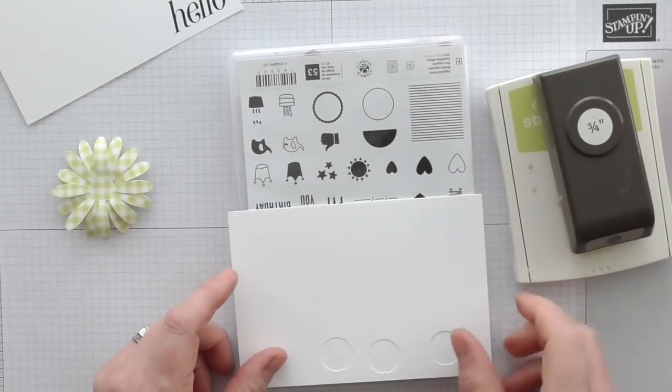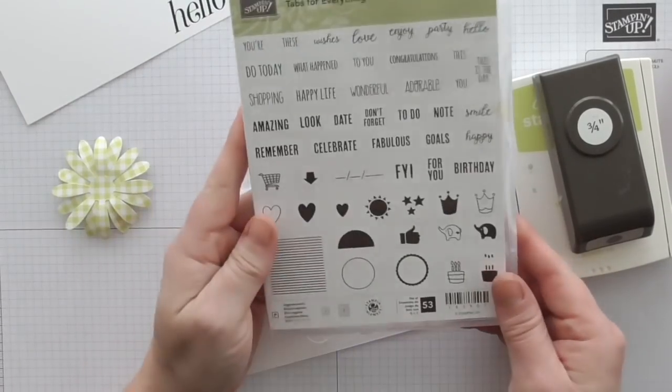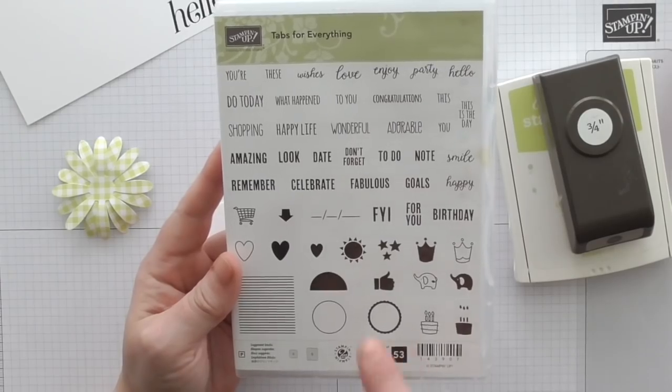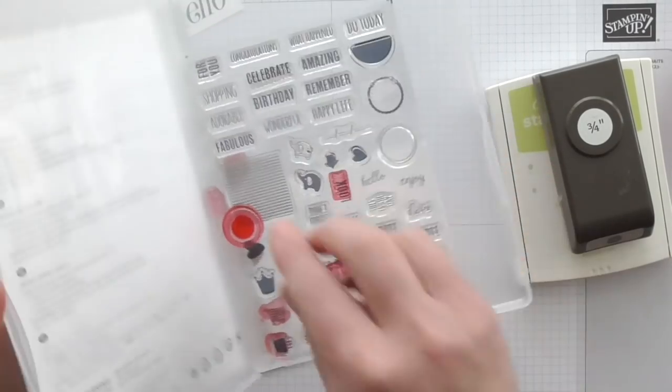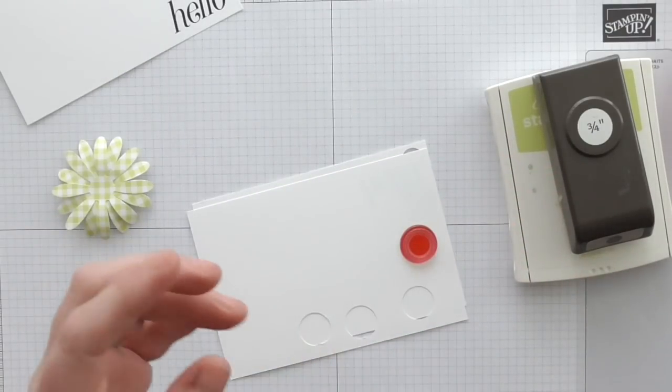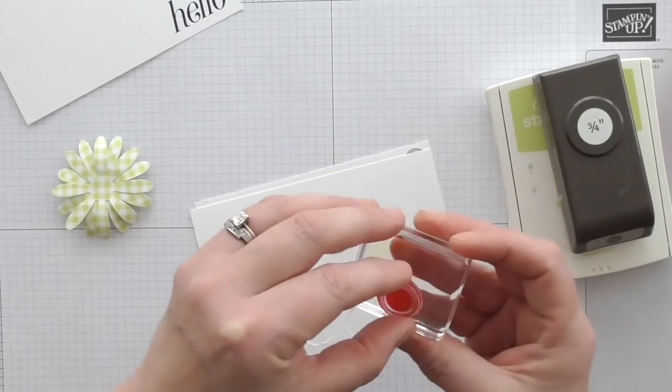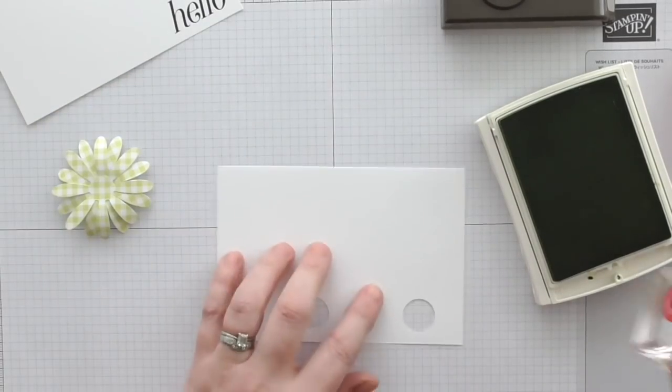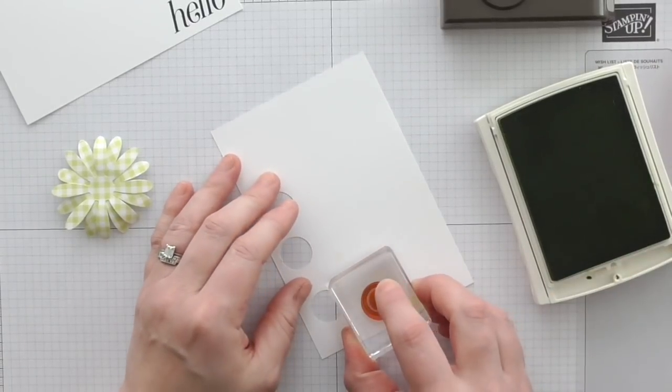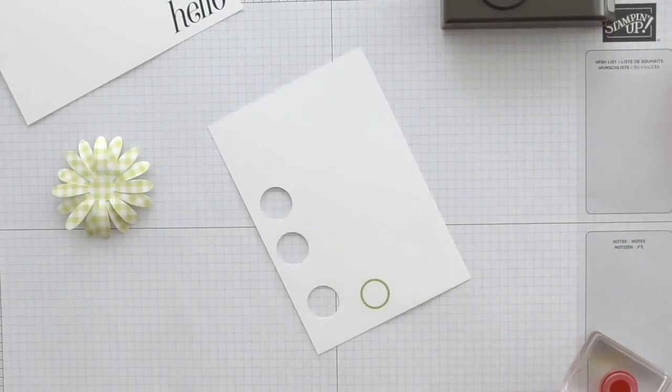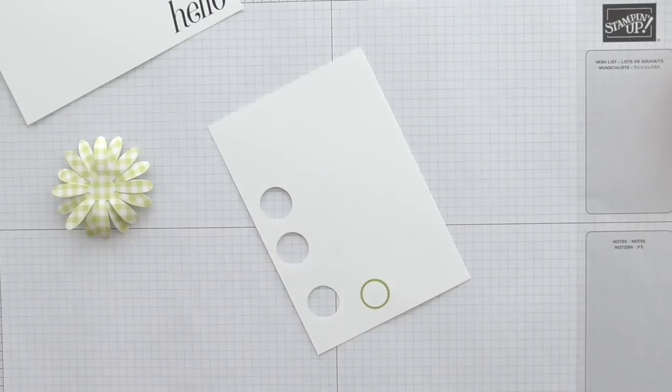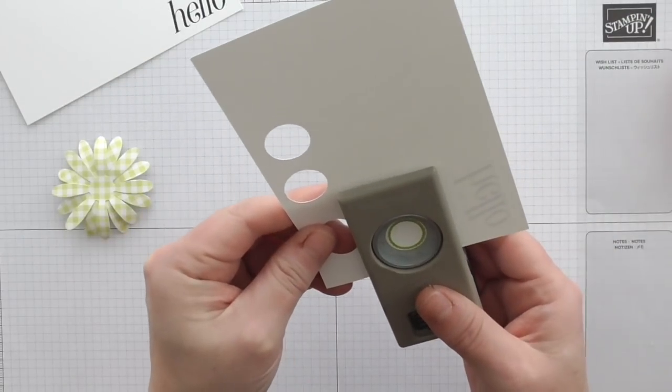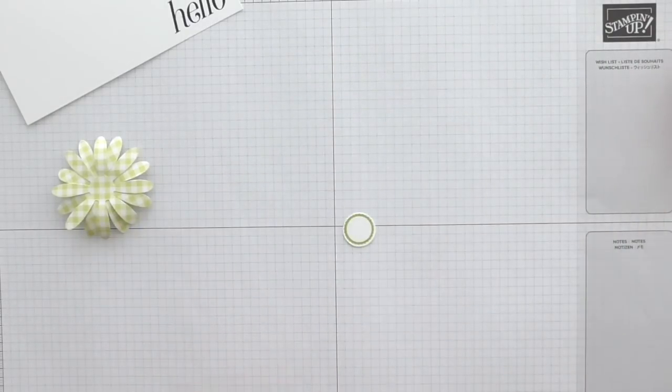So to make it I'm using the lemon lime twist ink which obviously coordinates. I've got my three quarters of an inch circle punch, I've got some scrap and I've got my Tabs for Everything stamp and I'm going to use this little circle here, it's like a scalloped circle. Now this set is awesome I love this set and I use these little tiny sentiments for all sorts of things. So I'm going to mount it on a small block and then ink it up and this is going to be our button.